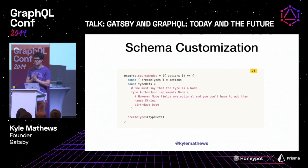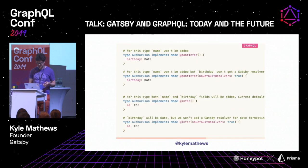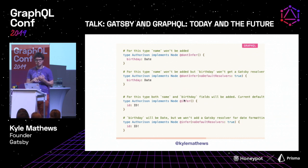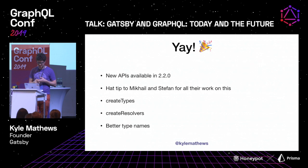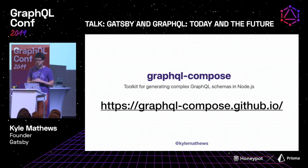What we've done is added helpers that let you define your types explicitly. Now you can just say name is string and birthday is a date, and regardless of what the data contains, that will be taken care of. You can explicitly define everything and say 'don't infer anything.' This has been great because we're working with a lot of CMSs building source plugins for Gatsby — they can use a known source of truth from the CMS to create the schema on our side. This launched about a month ago in version 2.2.0, with Mikhail Novikov and Stefan leading the work. Shout out to GraphQL Compose, which we worked with closely.